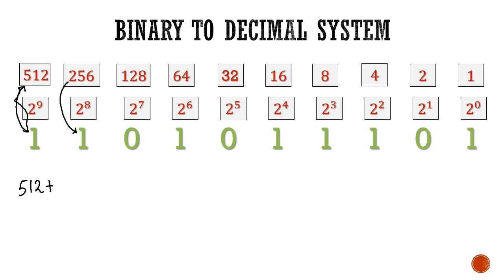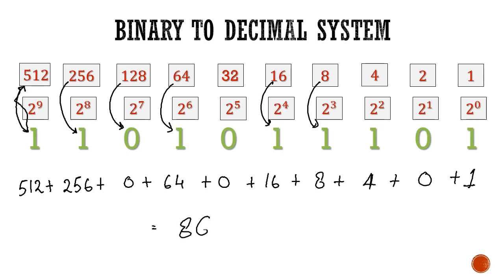This number in decimal system will be expressed as 512 times 1 which is 512 plus 256 times 1 which equals 256 plus 0 times 128 equals 0, plus 64 times 1, plus 0, plus 16 times 1 which is 16 plus 8 times 1 which is 8 plus 4 plus 0 plus 1. If I add all these numbers I will get 861. Therefore, 1 1 0 1 0 1 1 0 1 in binary is equal to 861 in decimal system.